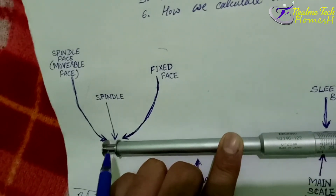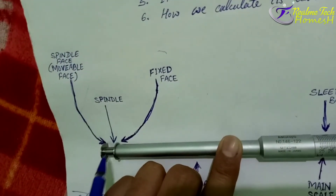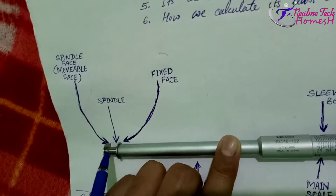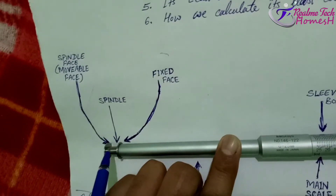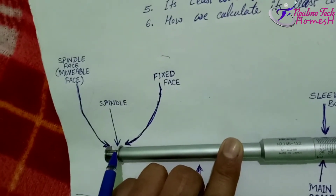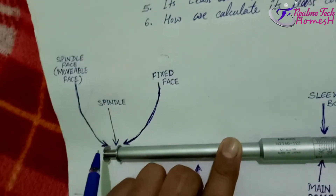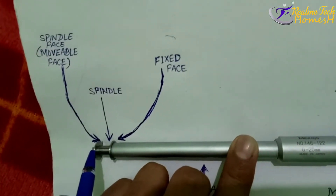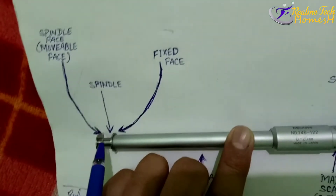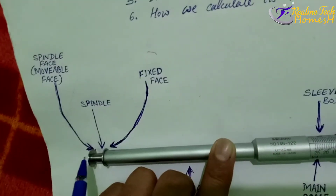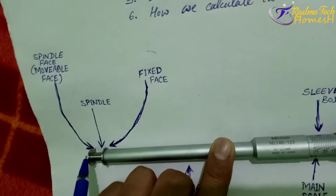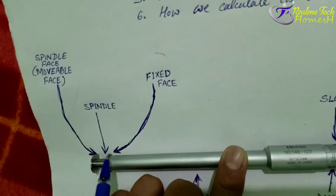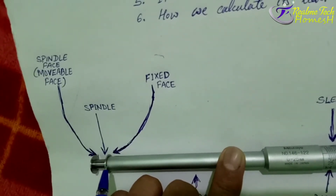This is the spindle — when we measure any groove, big or small, it moves in and out. Attached to the spindle is a face called the spindle face, or movable face, because it moves with the spindle when measuring large or small grooves. This other face is called the fixed face, as it is fixed to the frame.